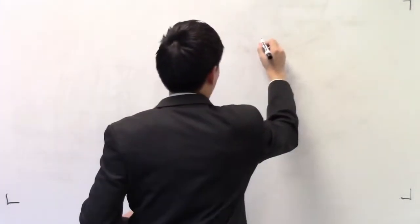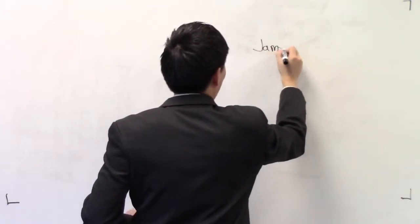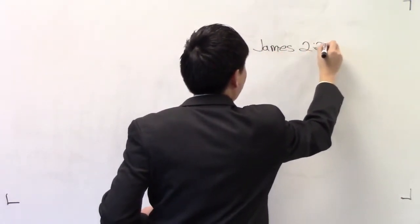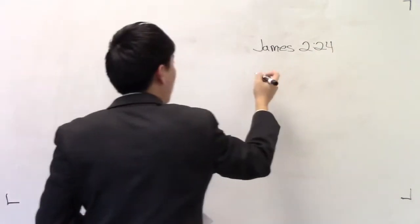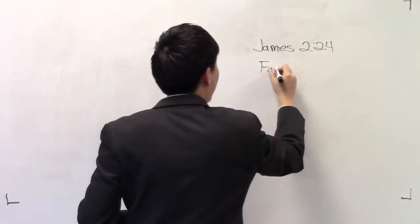Basically, a lot of churches know that verse. It's basically by works. They say, you see then how by works a man is justified and not by faith only. So James 2:24, what it's showing right here is that there is faith and works.